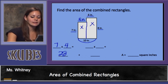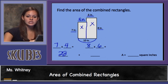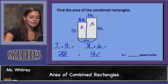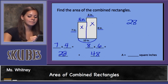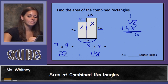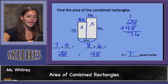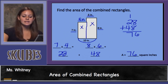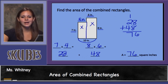First we'll multiply 7 times 4, which equals 28. Next we'll multiply 8 times 6, which equals 48. We'll add the two areas together: 28 plus 48, and we get 76 square inches. The area of the shape equals 76 square inches. This concludes our lesson on area of combined rectangles.